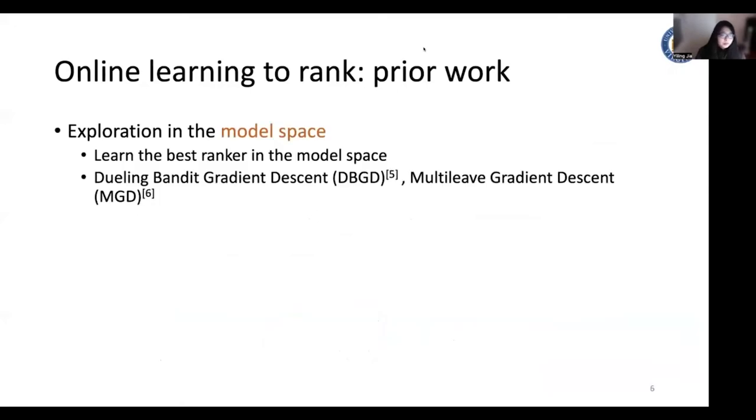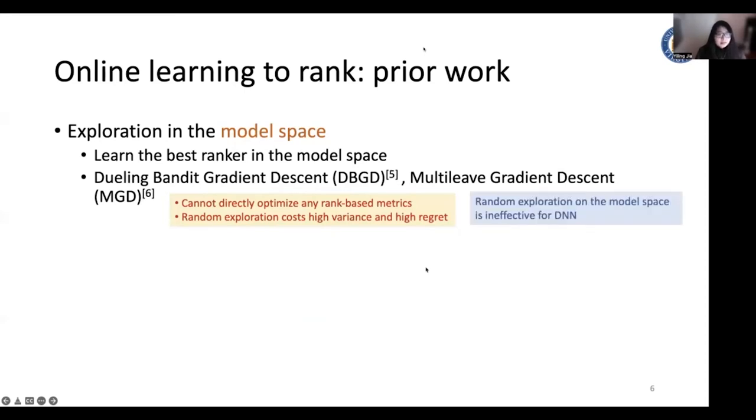There's a lot of work proposed previously to perform the exploration in online learning to rank. They can broadly categorize into several directions. The first half of work explores in the model space. They directly learn the best ranker by random sampling in the model space. However, this work cannot directly optimize any rank-based matrix. And the random exploration causes high variance and high regret. And such random exploration on the model space is very ineffective for deep neural network.